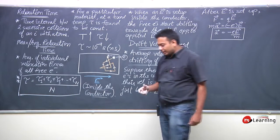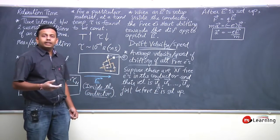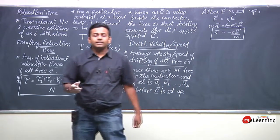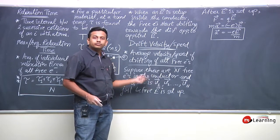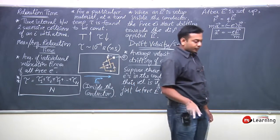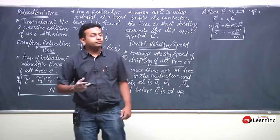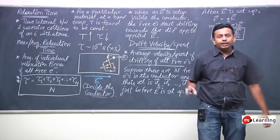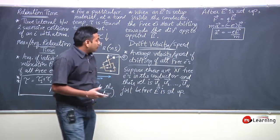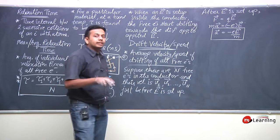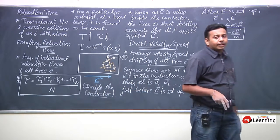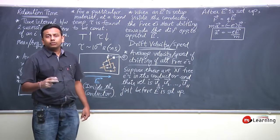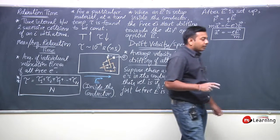As the electric field develops, due to this field an extra force comes in, giving extra energy to the electrons. They were already moving with some speed, but the effect of this acceleration will be that they will have added energy, and that added energy will contribute to making them collide even faster.